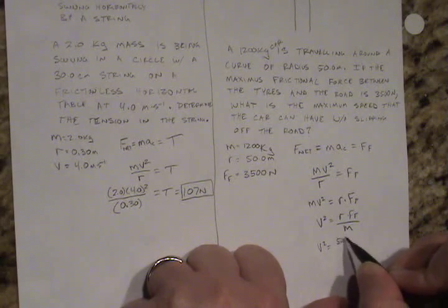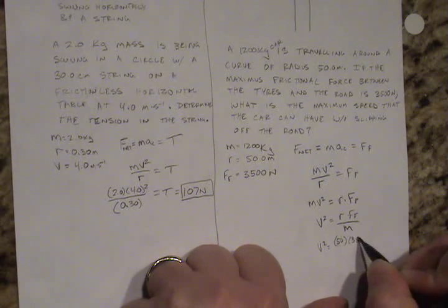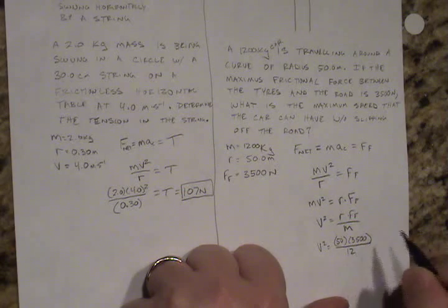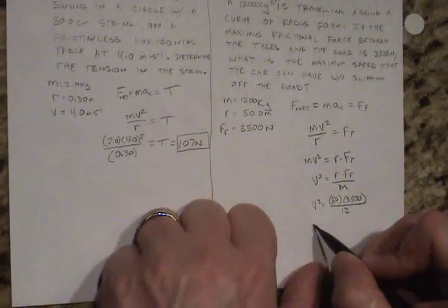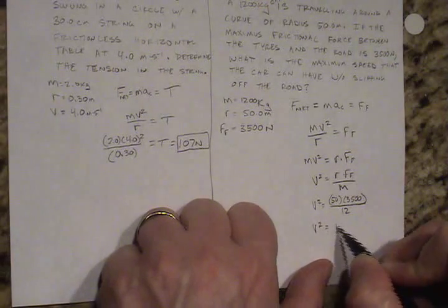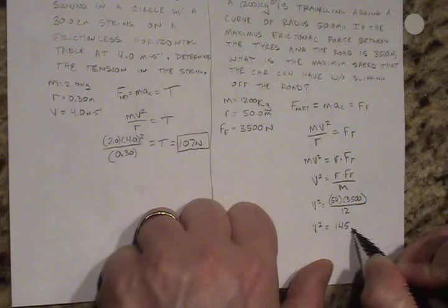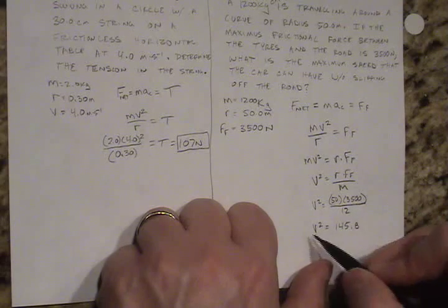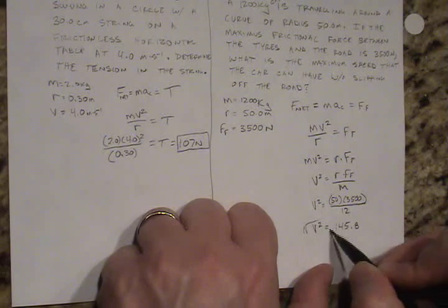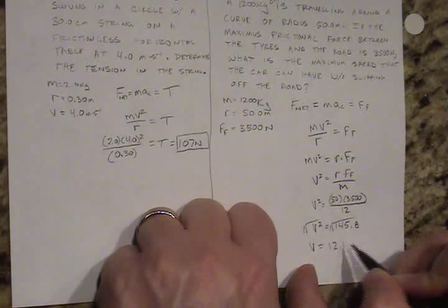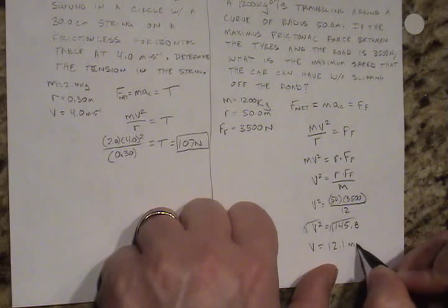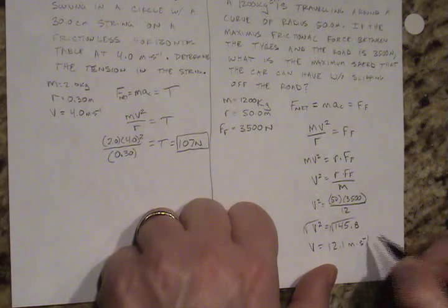This is 50 times 3,500 divided by 1200. So that gives me a v squared value equal to 145.8, and then I square root everything here, and that gives me a value of maximum speed of 12.1 meters per second.